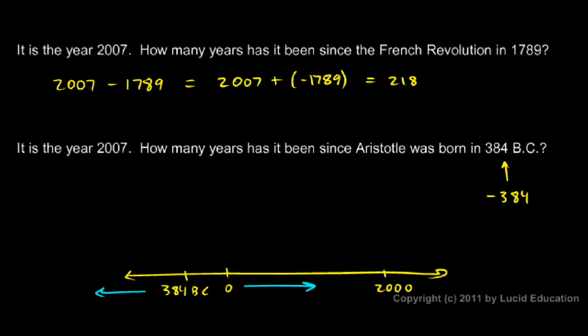So when I want to do 2007 minus this, I'll be subtracting a negative number. 2007 minus negative 384.